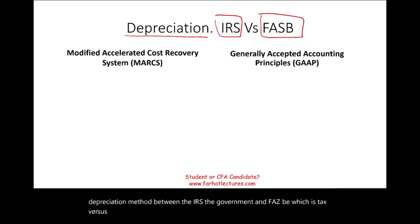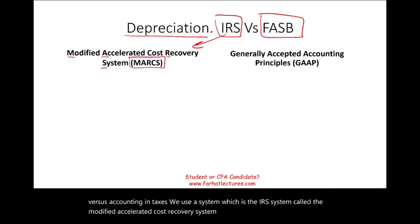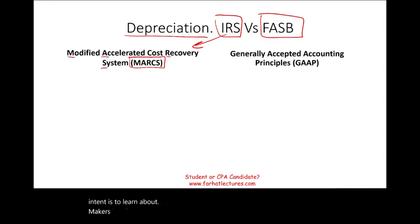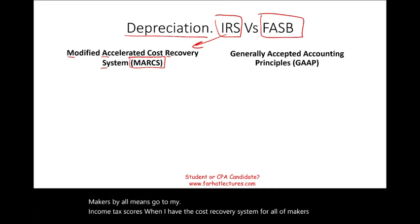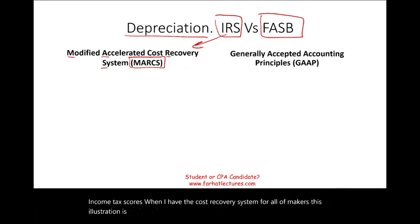In taxes, we use a system called the Modified Accelerated Cost Recovery System, or MACRS for short. This illustration is to draw the difference between MACRS and FASB and GAAP depreciation.